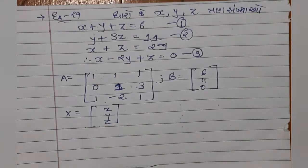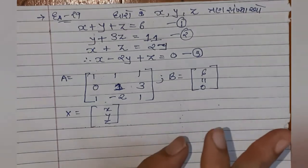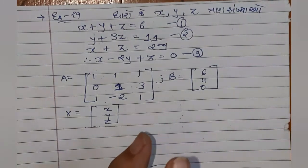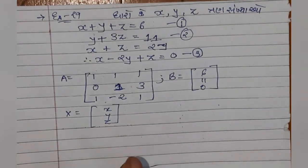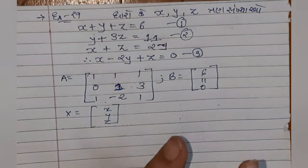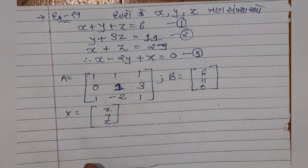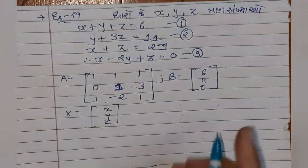AX = B લખ્યા પછી det(A) ≠ 0 ચકાસો, adj A સોધો, A⁻¹ = adj A / det A, અને X = A⁻¹B ગણો. આ રીતે ઉકેલ મળે. આ પ્રેક્ટિસ કરો, અને કોઈ પ્રશ્ન હોય તો ફોન કે મેસેજ દ્વારા પૂછી શકો. Thank you.